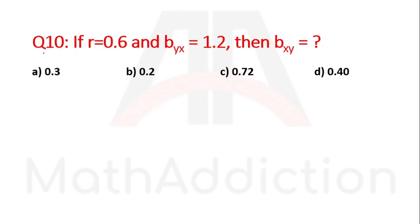Question number ten: If r equals 0.6 and b_yx equals 1.2, then b_xy equals what? The formula is r squared equals b_yx times b_xy. So 0.6 squared equals 1.2 times b_xy.